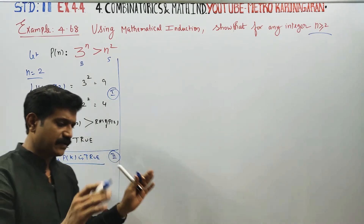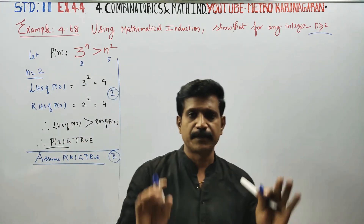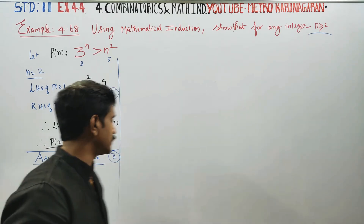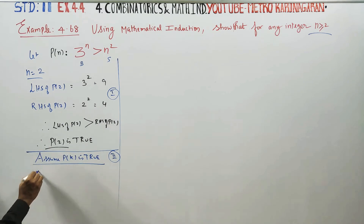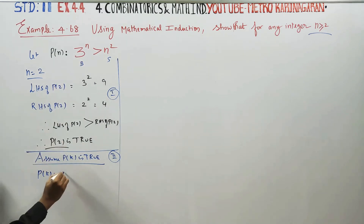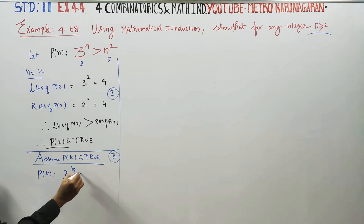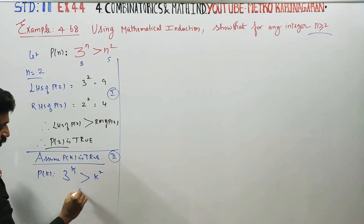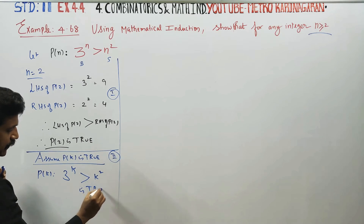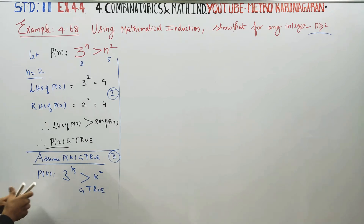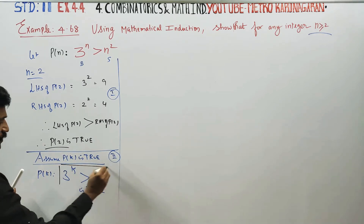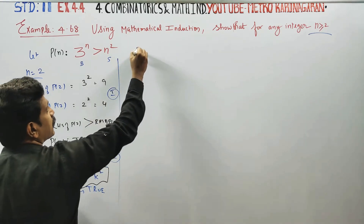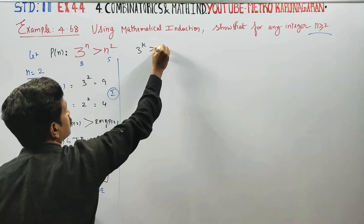Now consider P of k — this is the inductive hypothesis. We assume that 3 power k is greater than k squared is true.